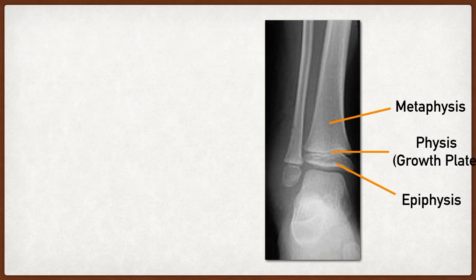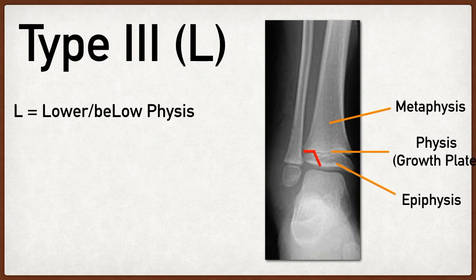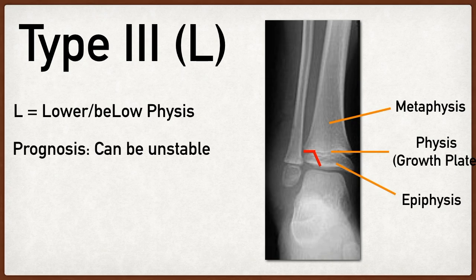A type 3 Salter Harris fracture is a fracture that travels through the growth plate and down into the epiphysis. The way to remember this is to use the third letter of SALTER, which is L, and that will help you remember lower or below the physis. These fractures can potentially be unstable, especially if the joint space is involved, and operative management is sometimes necessary.